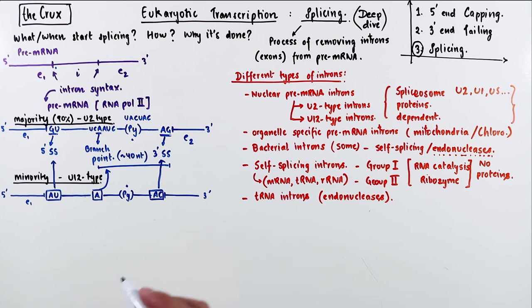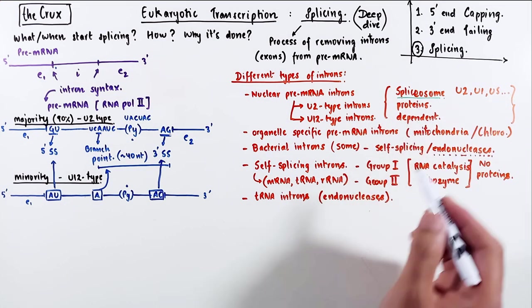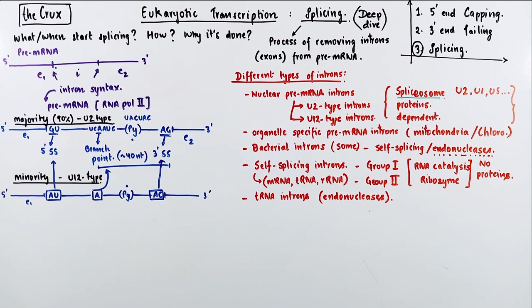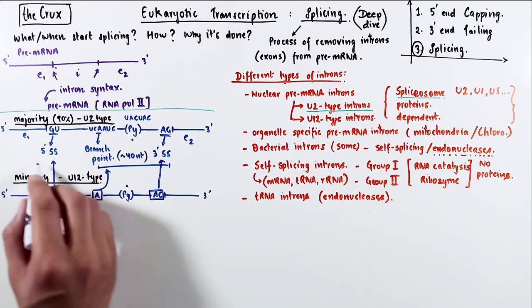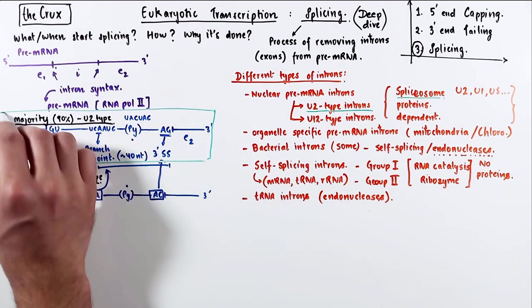So that's a lot of information, but for this video, we will focus only on the spliceosome-dependent introns. And out of the two that we have discussed, we are only going to talk about the U2-type introns, because that's the majority case.